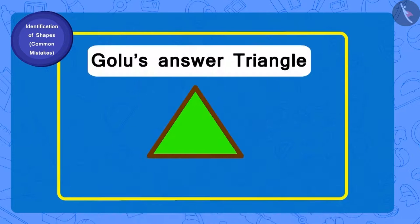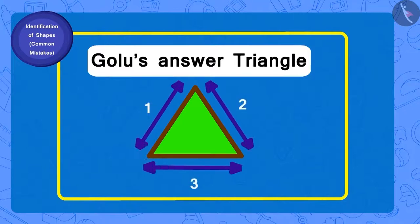Golu has written triangle as the answer. How many sides does a triangle have? Three. And how many corners? Three.